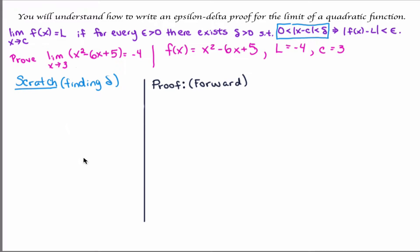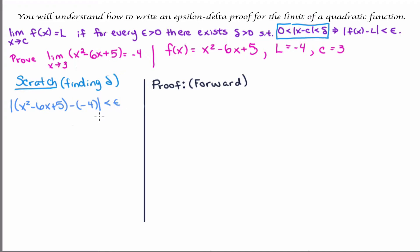We'll have scratch work that we need to complete in order to find the delta that works for this proof. In other words, this delta will always ensure that the distance between f and l is less than epsilon. The way we do that is we begin with what we want: the absolute value of f(x) minus l less than epsilon. In our case, f(x) is x squared minus 6x plus 5, so we have the absolute value of x squared minus 6x plus 5 minus l, where l is negative 4, less than epsilon. We'll begin with this and somehow in our scratch work end up with something of the form: the absolute value of x minus 3, because c is 3, is less than some delta in terms of epsilon.